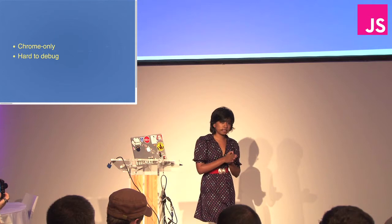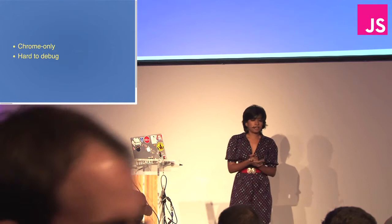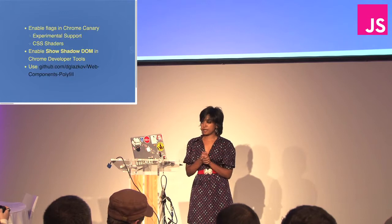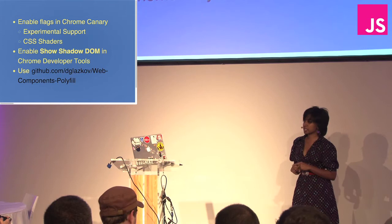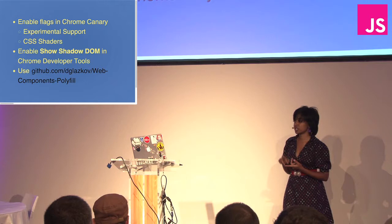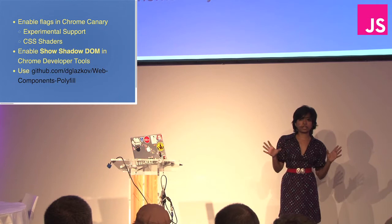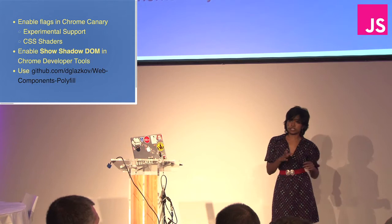First thing to note is it's Chrome only — not even WebKit only, it's Chrome only. It's also very hard to debug, especially because you have separating concerns with different components in different pages and different files. If you're still interested, you'd enable flags in Chrome Canary. There's a flag called experimental support for WebKit experiments, and that would give you Shadow DOM, CSS variables, and CSS regions. There's also another flag for CSS shaders. Enabling these two flags will give you everything you need to follow along.